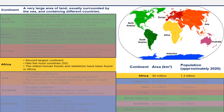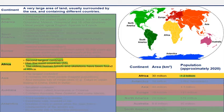Africa is the second largest continent. It has the most countries — 55. The oldest human fossils and skeletons have been found in Africa, and the population is 1.2 billion people, which is a lot. Europe's population is 741 million, so 1.2 billion is even more — there are a lot of people that live in Africa.